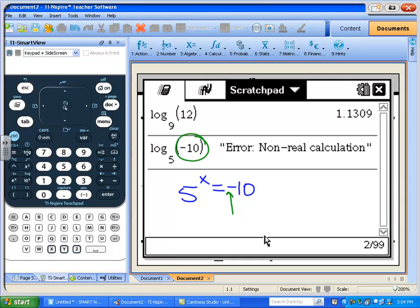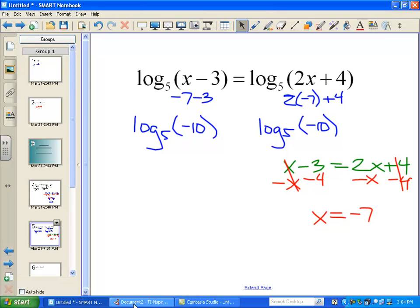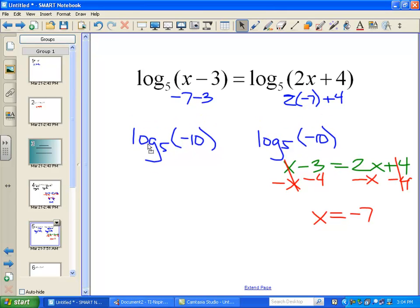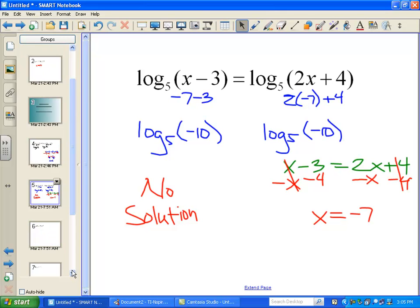So, if you put your answer back in the logarithm and you find that you're taking the log of a negative, like we did right here with these two logs, then that's bad. So, that, in this case, would lead us to an answer of no solution for now. All right. So, just be good about checking your work on those.